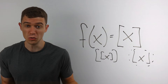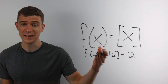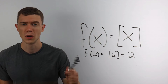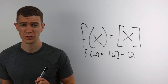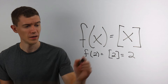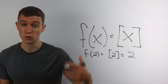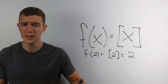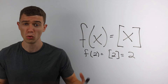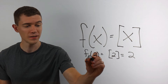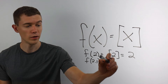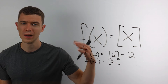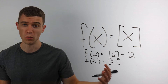So what does this thing do? It outputs the greatest integer less than or equal to the input. So if I plug in 2, the greatest integer less than or equal to 2 is 2. Remember, integers are whole numbers. But if I put in something like f(2.1), what's the greatest integer less than or equal to 2.1?